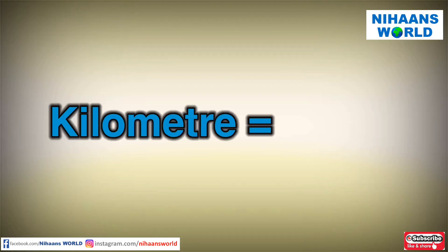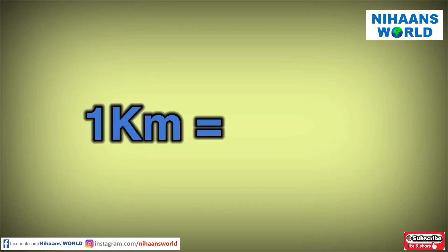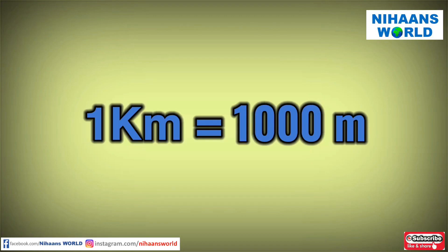Kilometer — short form is km. The kilometer is longer than both meter and centimeter. 1 kilometer is equal to 1000 meters.